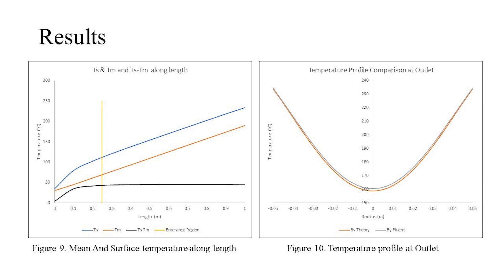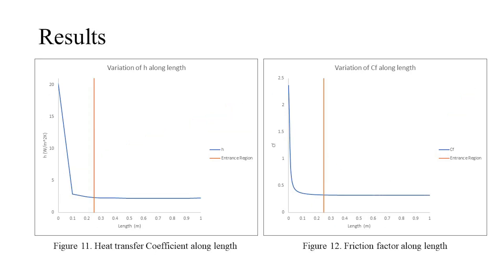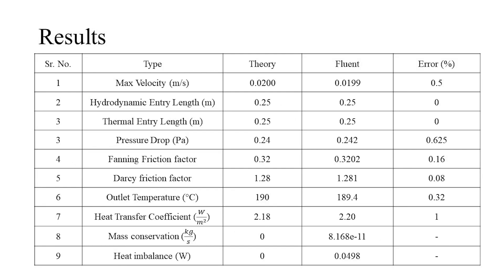Figure 9 represents the variation of surface temperature and mean temperature along the lengths of the pipe, and we can observe that after entry length, both are of the same slope. Figure 10 represents the comparison of the theoretical and the simulated temperature profile at the outlet. Figures 11 and 12 represent the variation of heat transfer coefficient and friction factor along the lengths of the pipe, and we can observe that both stop varying after entry length. The following table shows the analytical and simulated results for different parameters and the error between them.